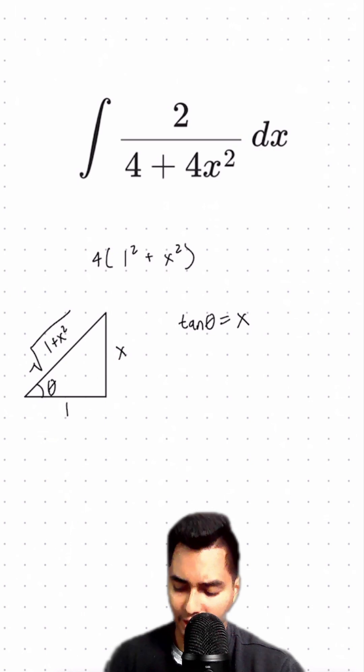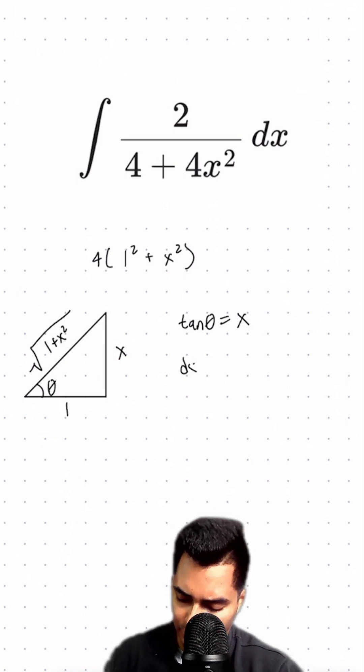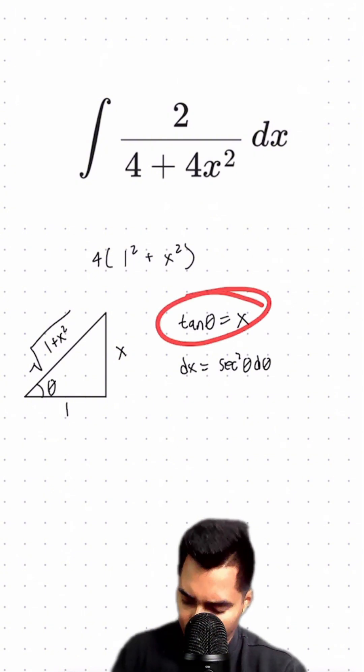So x equals tangent theta, and therefore dx equals secant squared theta d theta. This will be our trig substitution.